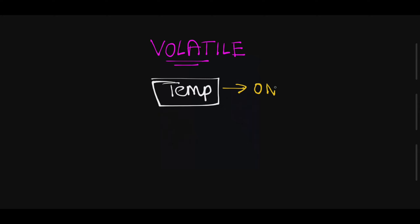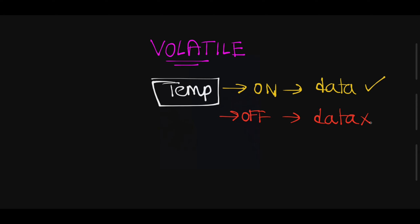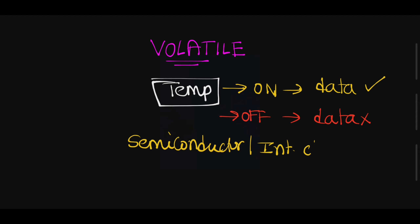The volatile meaning is temporary memory. What is the meaning of temporary? Whenever power is on, data is available; whenever power is off, data is not available. Technically we can say that it is stored in a semiconductor or integrated chip.